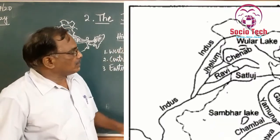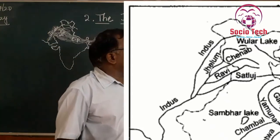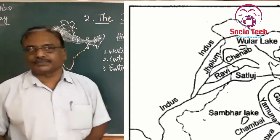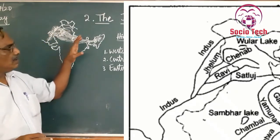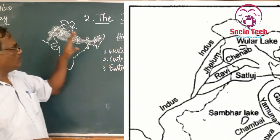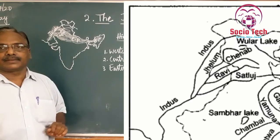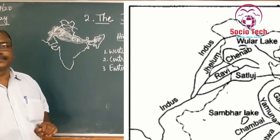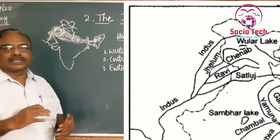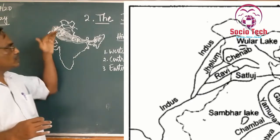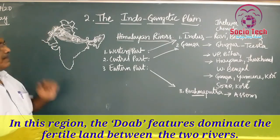The tributaries of the Indus river include Jhelum, Chenab, Ravi, Beas, and Sutlej. But most of this plain is situated in Pakistan; only a small portion is left in India.